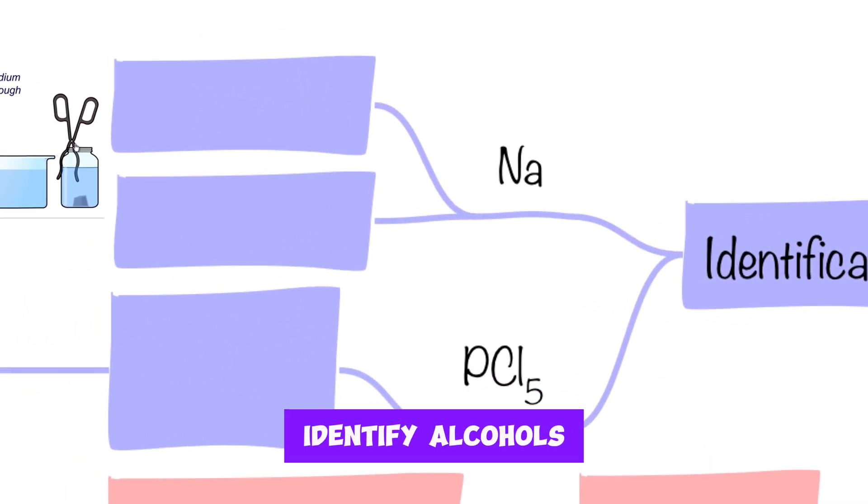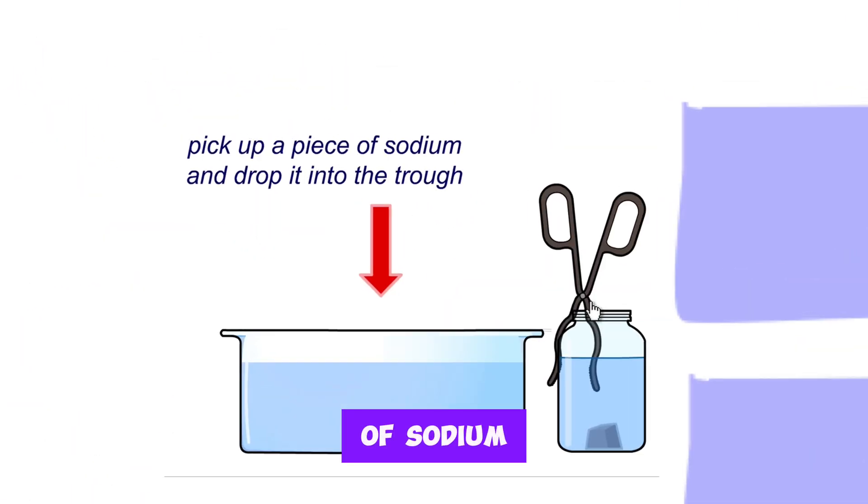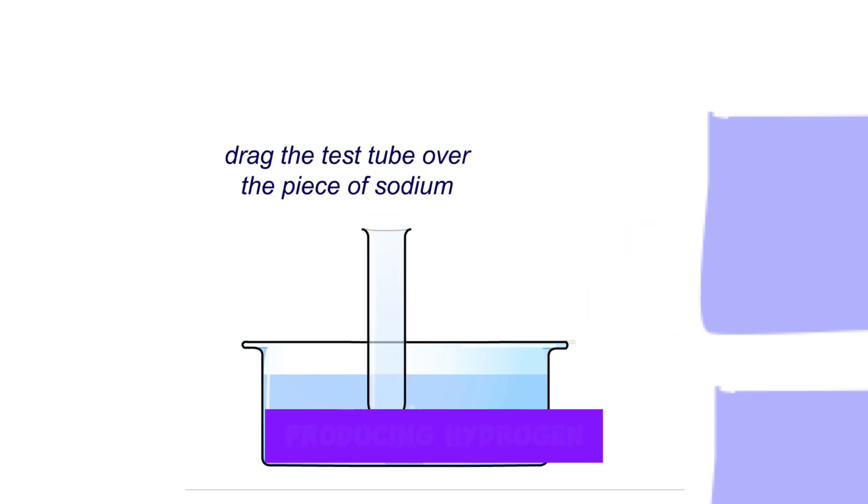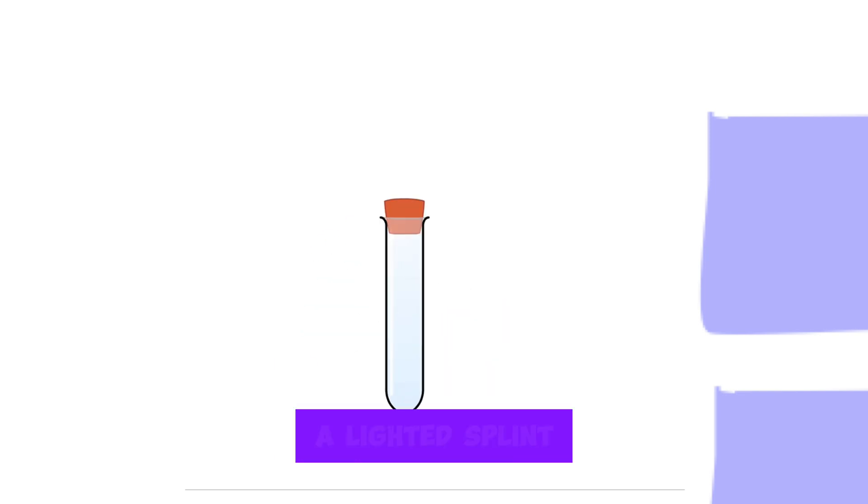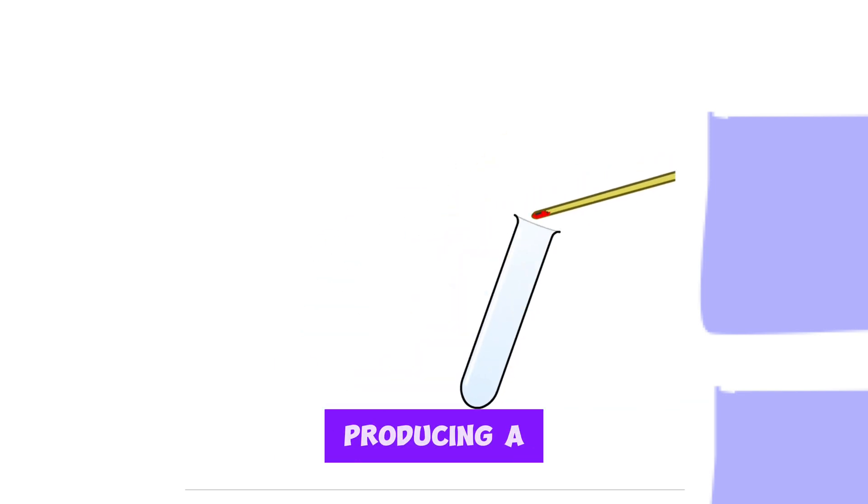You can identify alcohols by means of sodium. When you drop sodium into an alcohol you'll be producing hydrogen gas which you can test for by using a lighted splint producing a squeaky pop.